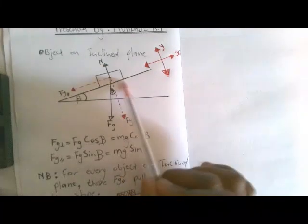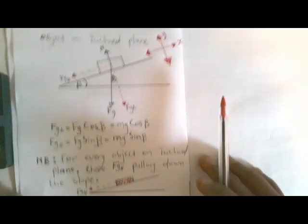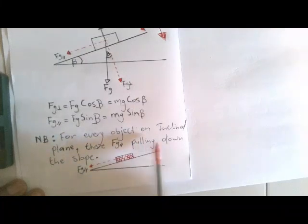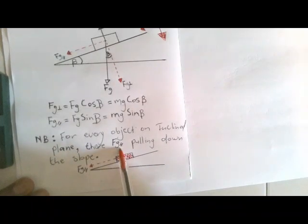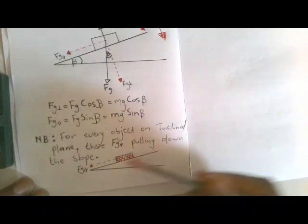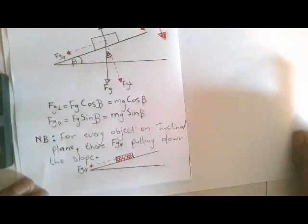For every object on an inclined plane, FG parallel influences its motion. Note that FG parallel always pulls down the slope. If the object is going down the slope, FG parallel pulls down the slope. If the object is moving up the slope, FG parallel still pulls down the slope. FG parallel always pulls down the slope.